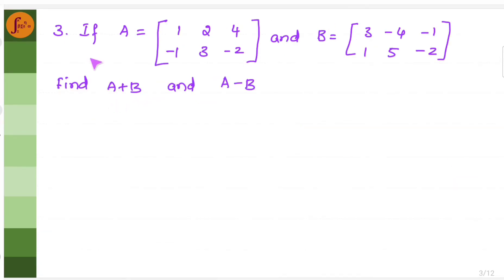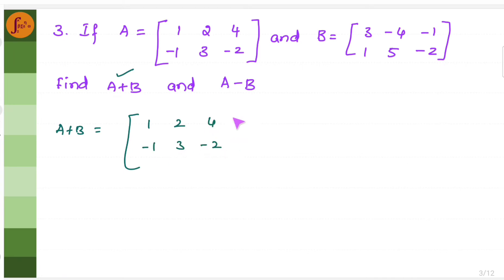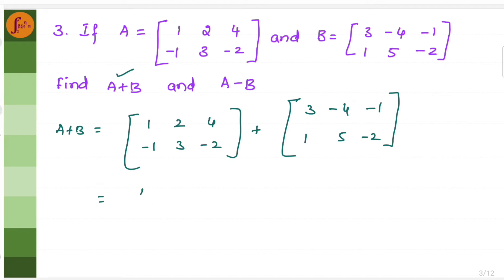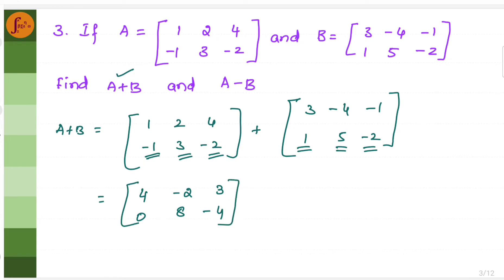Now let's go to the third problem. If matrix A and matrix B are given, find matrix A plus B and matrix A minus B. This is direct matrix addition. Matrix A plus B: you add the elements 1 plus 3 is 4, 2 minus 4 is minus 2, 4 minus 1 is 3, minus 1 plus 1 is 0, 3 plus 5 is 8, minus 2 plus minus 2 is minus 4. This is A plus B.